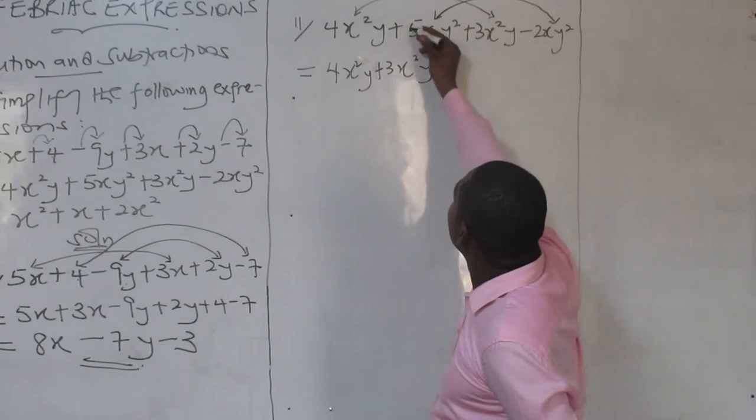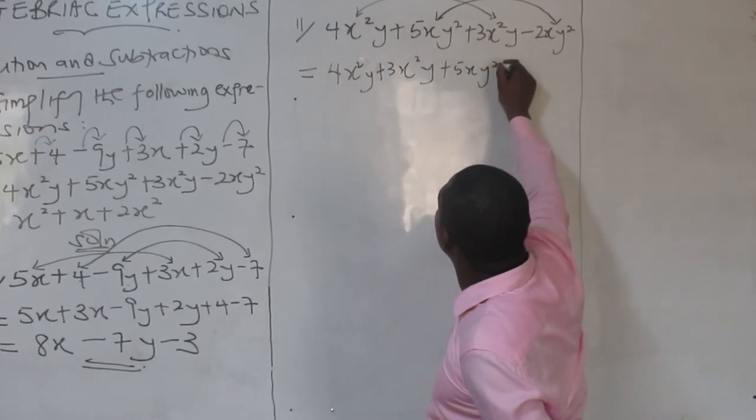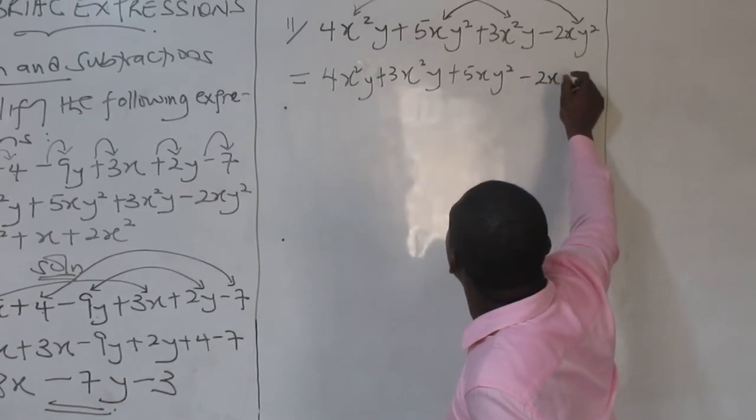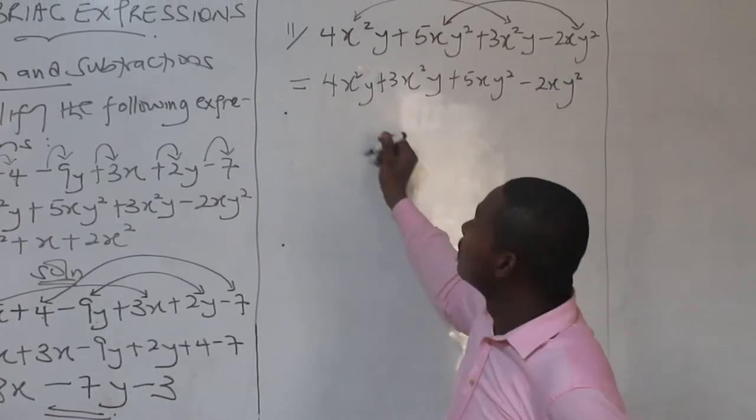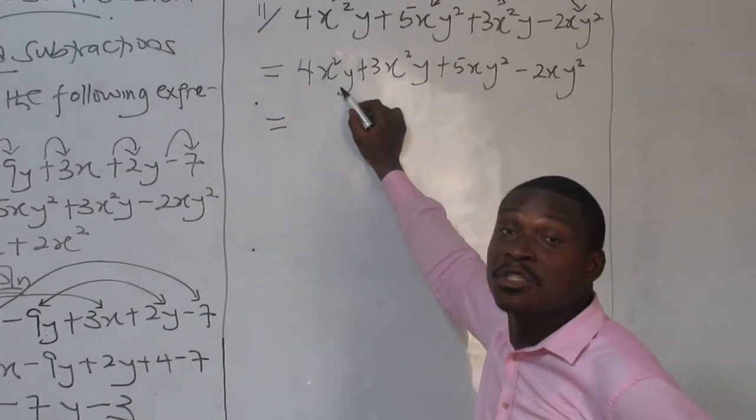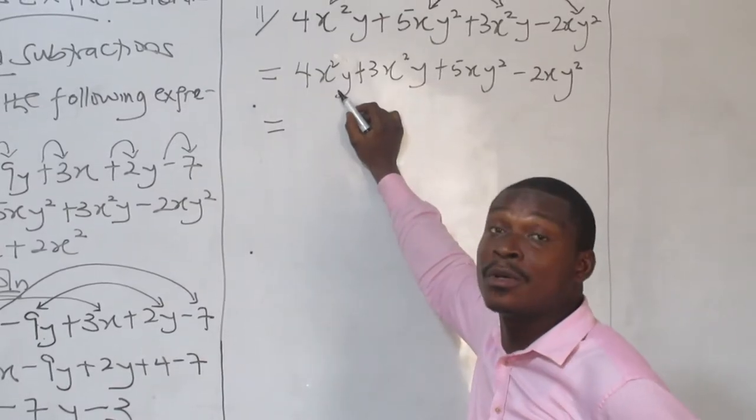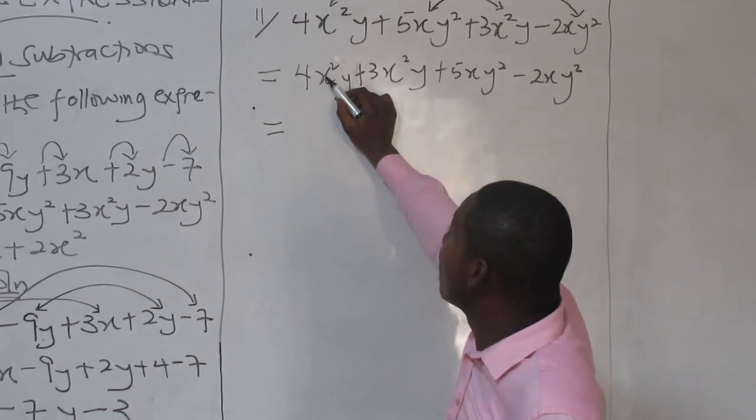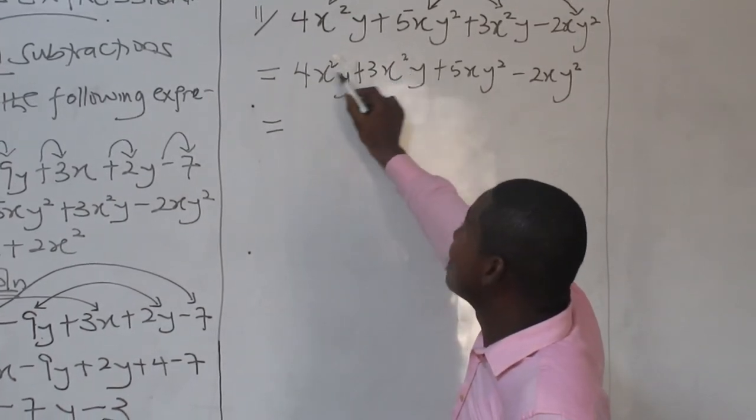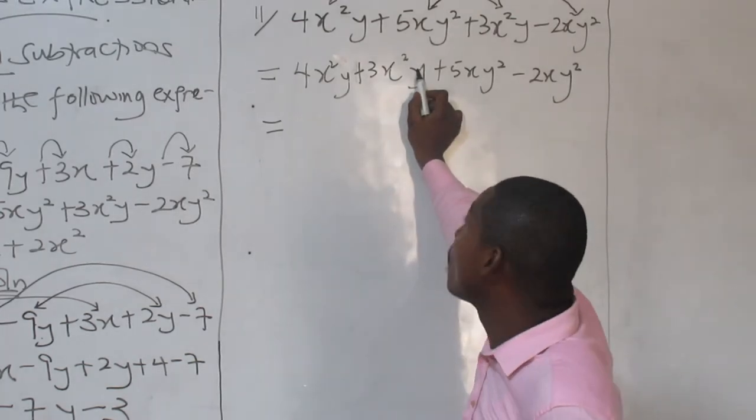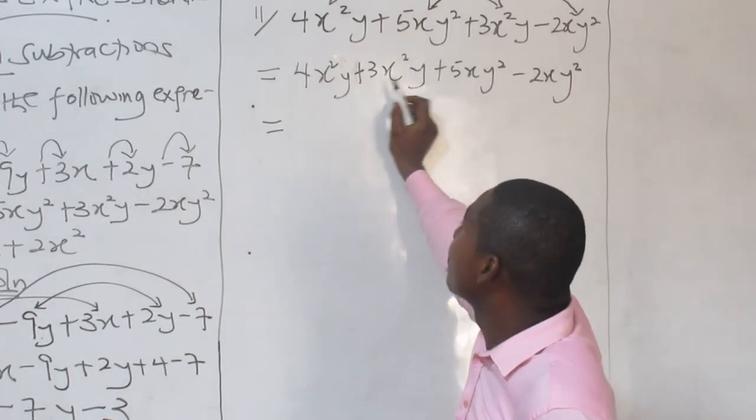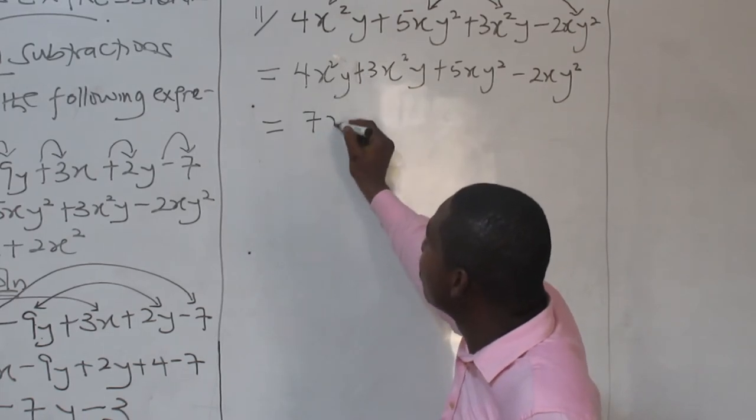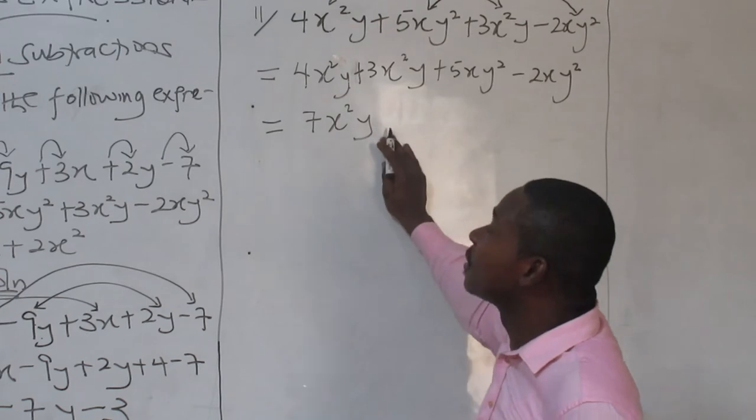Now, there is 4x squared plus 3x squared y. Plus 5xy squared minus 2xy squared. Now, can I add this from the algebraic addition rule? The answer is yes. There is a variable x with a square. They are the same. Y, y. Power 1, power 1. They are still the same. They can be added. So, 4 plus 3 is 7. You factor 1 of this. That is how the addition goes.